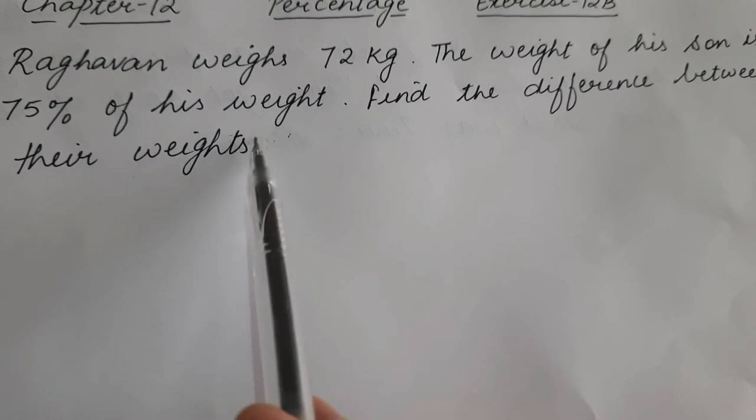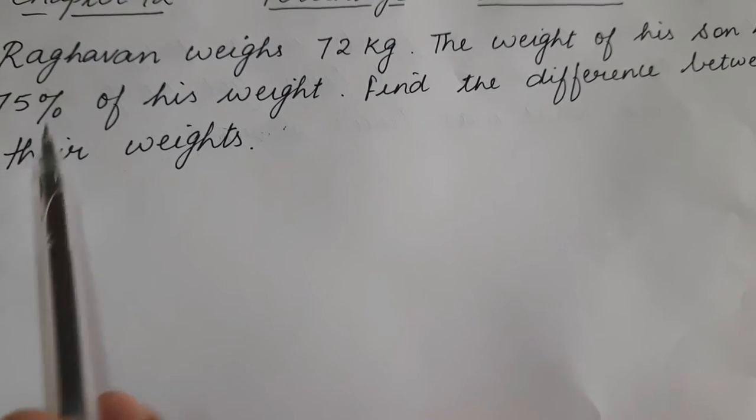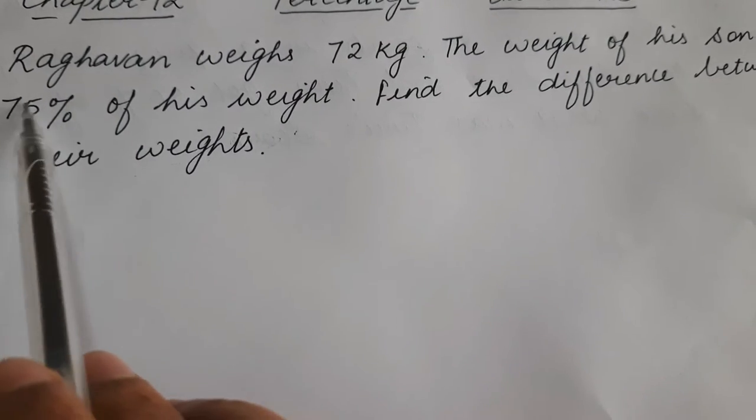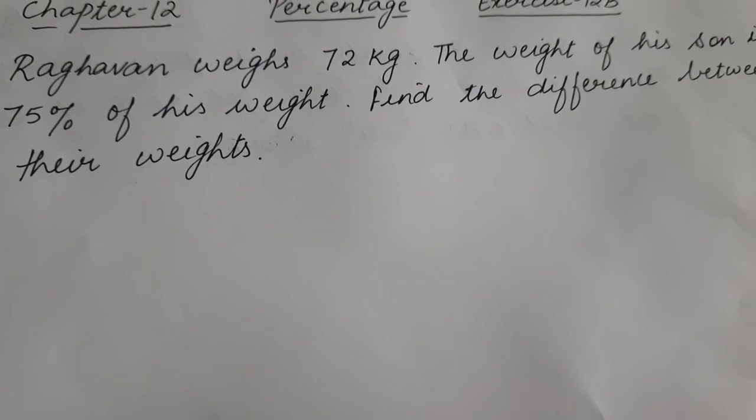To find the difference between their weights, first we need to find Raghavan's son's weight. Raghavan's weight is given, and his son's weight is 75% of Raghavan's weight. So let's start the solution.